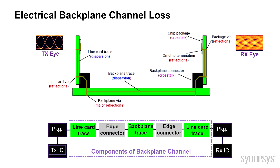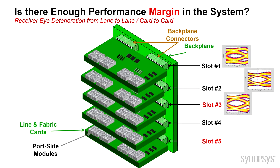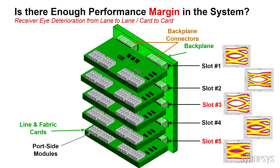As a result, an input eye that was clean and open ends up being very noisy. So, do you have the same margin on slot number three versus slot number five? As you see in this example, the eye opening is much smaller on slot number five than it is on slot number three. A system provider would like to evaluate before going into production if they are going to have enough margin as they move forward from PC board generation to generation or from vendor to vendor. This feature will allow them to validate the performance and the margin in their system way before production ramp.